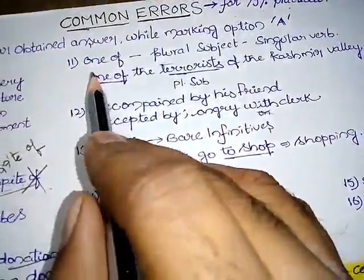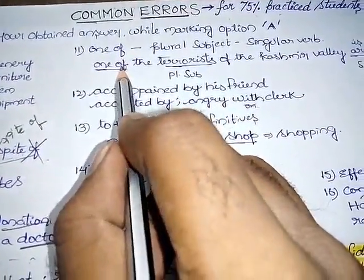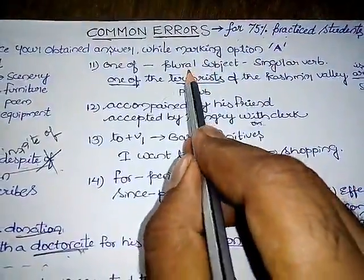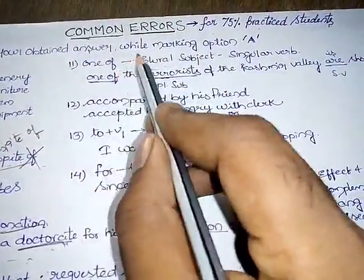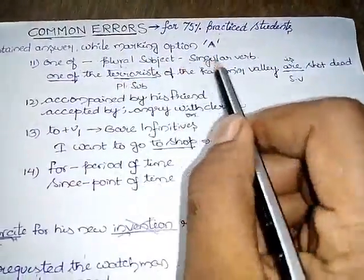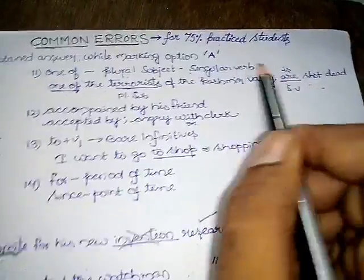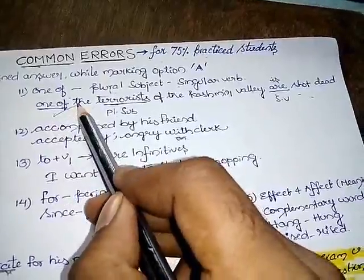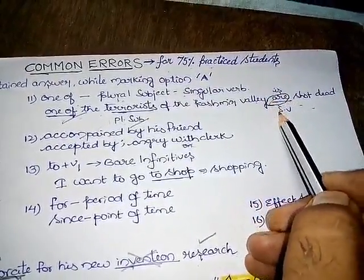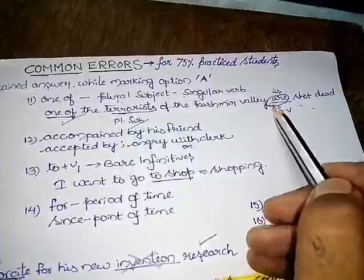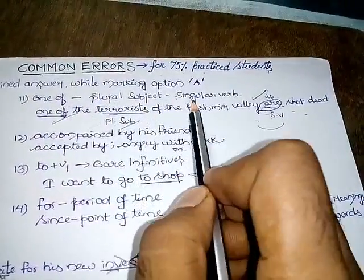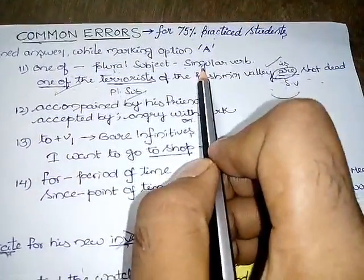Coming to statement eleven, one-of rule is very much important for the CHSL exam. For the one-of rule, there should be two terms. That is, plural subject and singular verb. One-of should be followed by always a plural subject and a singular verb.